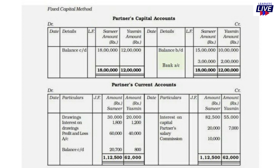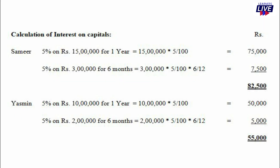Now we will prepare the current accounts. We will provide two columns — debit side and credit side. This is the interest on capital at 5%. In the opening capital, we will introduce the additional capital on July 1st and also compute the interest on capital. Samir: Rs. 15,00,000 x 5% = Rs. 75,000.